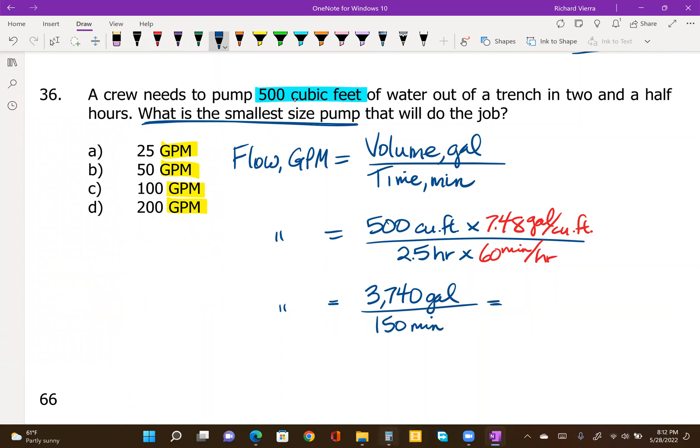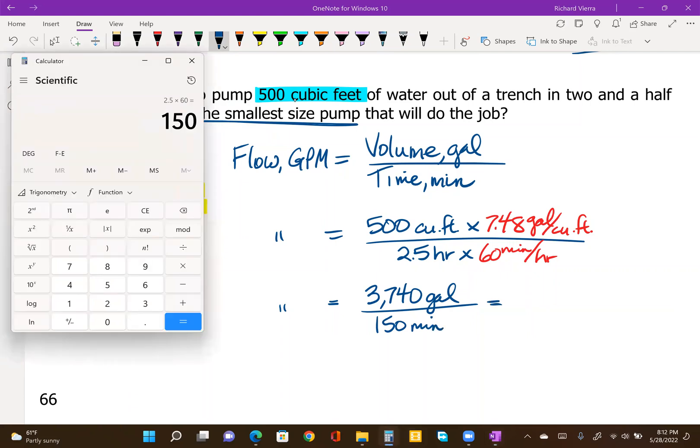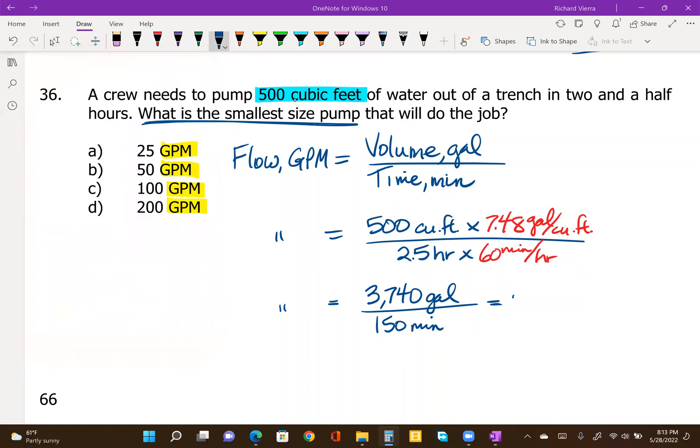So if we need to pump out 3,740 gallons in 150 minutes, we need a pump that's going to give us at least 24.93 gallons per minute. And that makes answer A the best choice.